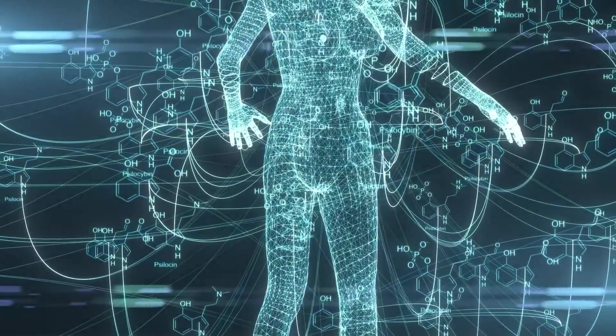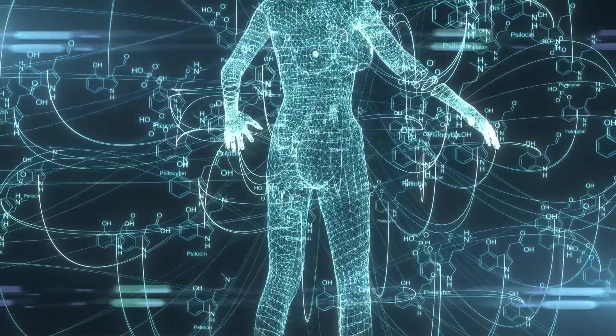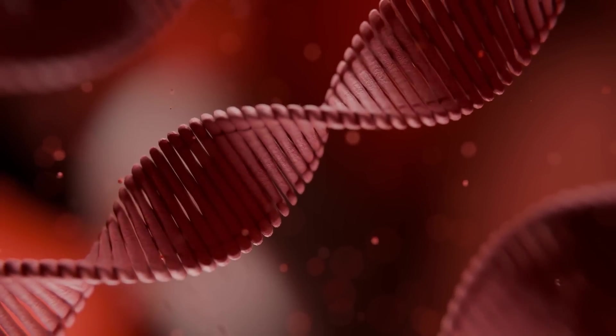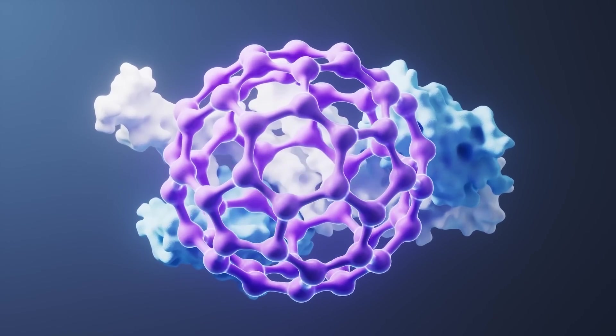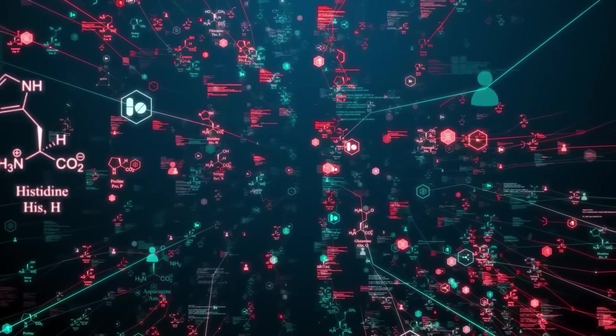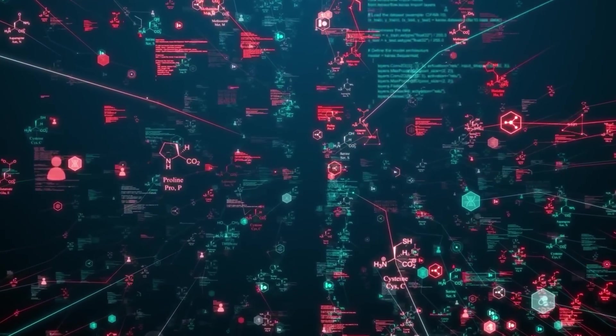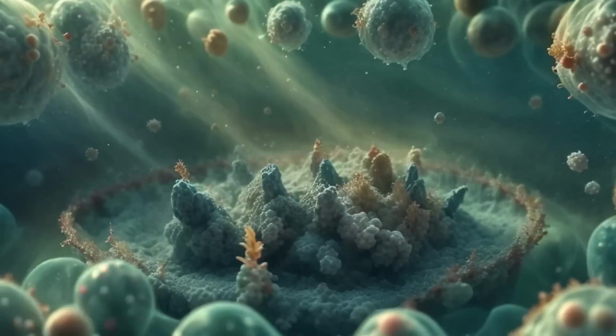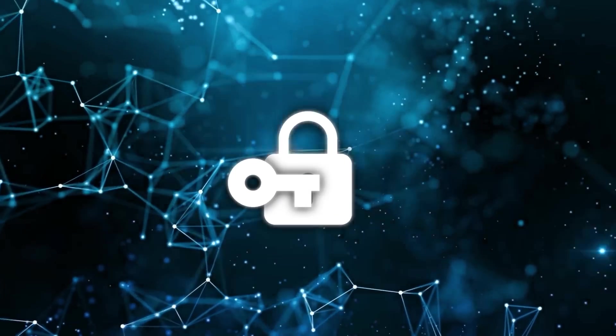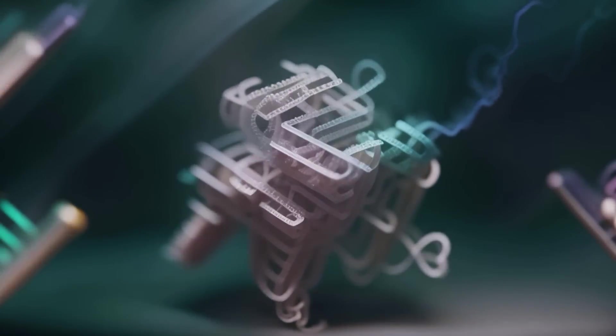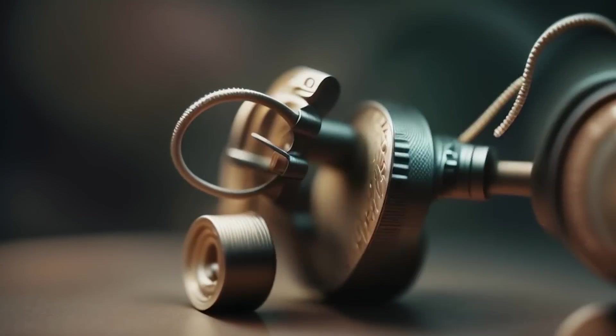You know how proteins are like the workhorses of our bodies, right? They do everything from helping our cells grow to keeping our immune systems running smoothly. And of course, they're at the core of pretty much every biological process. But here's the catch. These proteins don't just do their jobs in isolation. They interact with other proteins. Think of it like a key fitting into a lock. One protein binds to another, and that's how all these critical functions happen inside our cells.